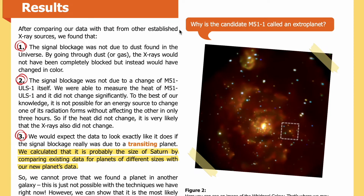Results: After comparing our data with other established X-ray sources, we found: one, the signal blockage was not due to dust — passing through dust or gas, X-rays would not have been completely blocked but would have changed in color. Two, the signal blockage was not due to a change in M51-ULS-1 itself. We measured its heat, and it did not change significantly. It is not possible for an energy source to change one form of radiation without affecting the other in only three hours — so if the heat did not change, the X-rays likely did not change either.